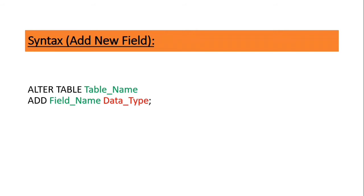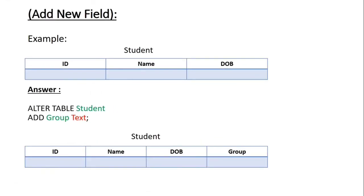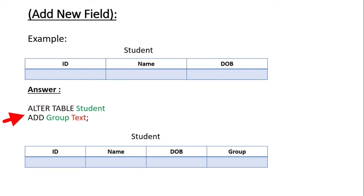Now see an example to add a new field. You can see the student table has id, name, and dob (date of birth) as field names. In the output, we add a new field called 'group'. So how to add a new field? First write ALTER TABLE, then 'student' — student is our table name — then write ADD, then space, 'group', then space, TEXT. Here 'group' is our new field and TEXT is the data type. This is the way to write the SQL command to add a new field.